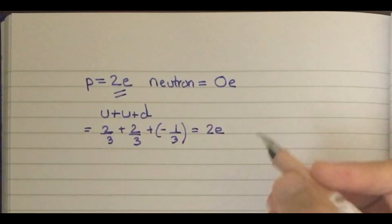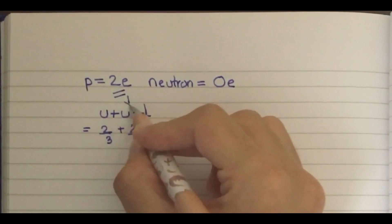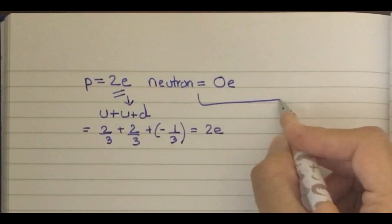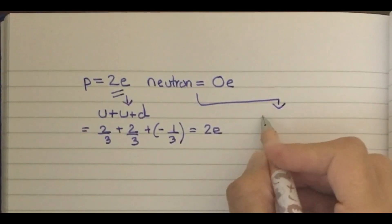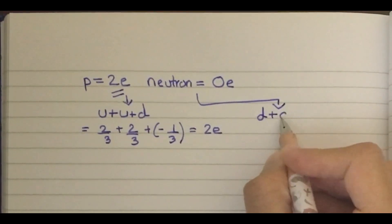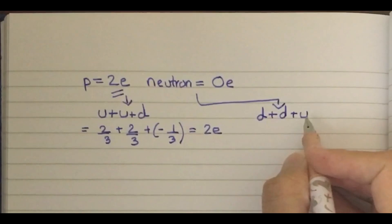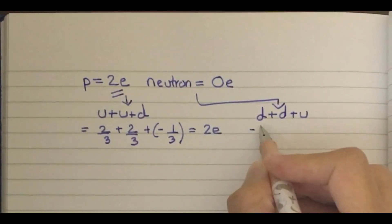That's for proton. For neutron, I can see the combination as d + d + u.